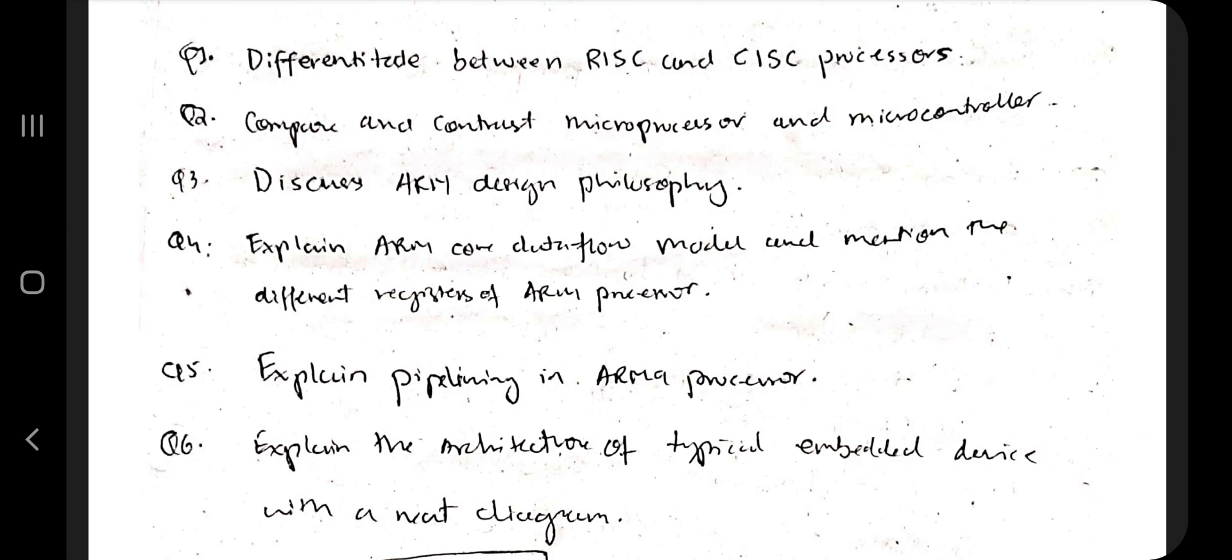In ARM design philosophy, there are four points. The four points you have to explain with examples—whatever its meaning is, or what is its advantage and disadvantage. Next one is ARM code data flow model.